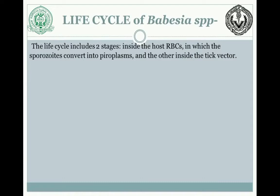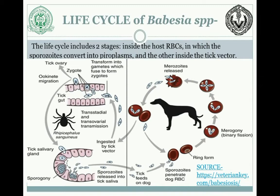Coming to the life cycle of Babesia species, there are two main stages. The first is inside the RBCs of the host, where sporozoites convert into pyroplasms. The other is inside the tick vector. Organisms are present in the saliva of the vector, and sporozoites are released into the bloodstream of the host when the vector feeds. The sporozoites penetrate the RBCs and undergo binary fission, ultimately being released. When uninfected vectors feed on the host, they take up the merozoites, which transform into gametes, fuse to form a zygote, then reach the salivary gland and undergo sporogony, releasing sporozoites into the saliva.